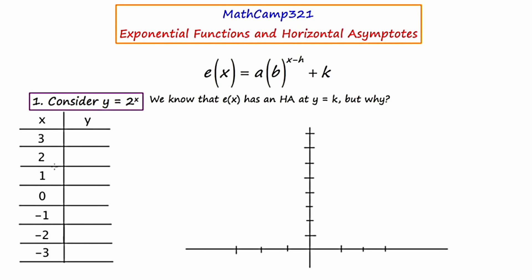And in a prior video I discussed that the role of k is that it reveals to us the location of this thing called the horizontal asymptote. So there's going to be a horizontal asymptote at whatever this value happens to be here.